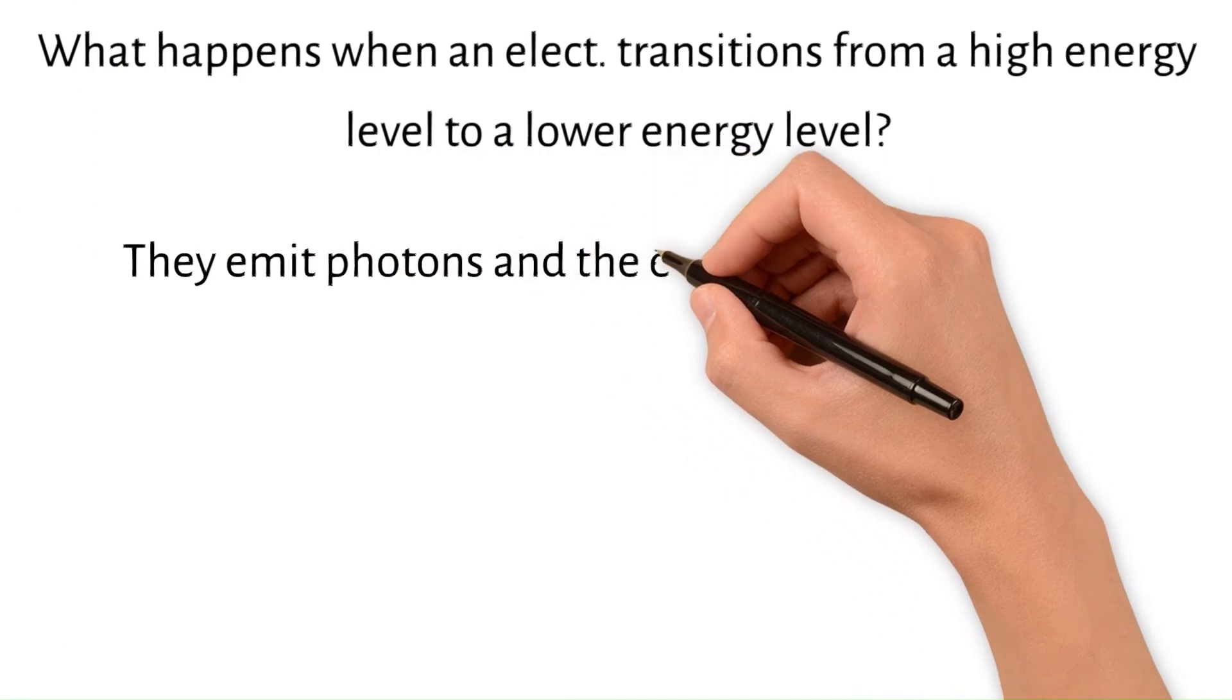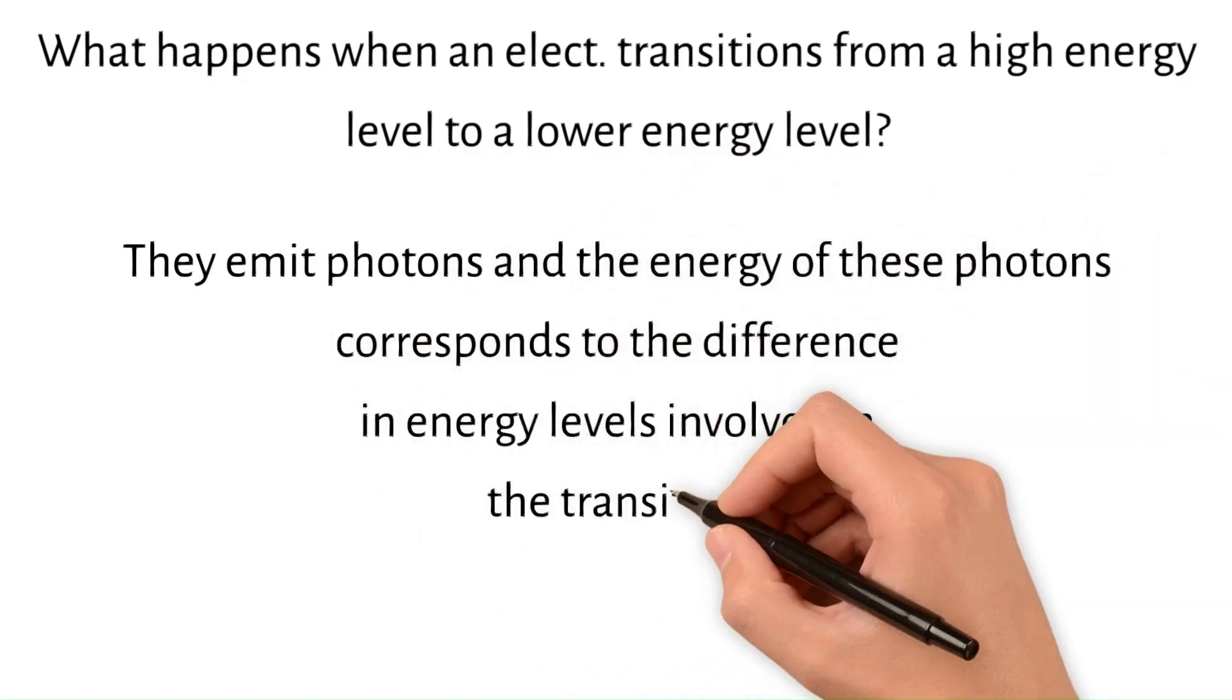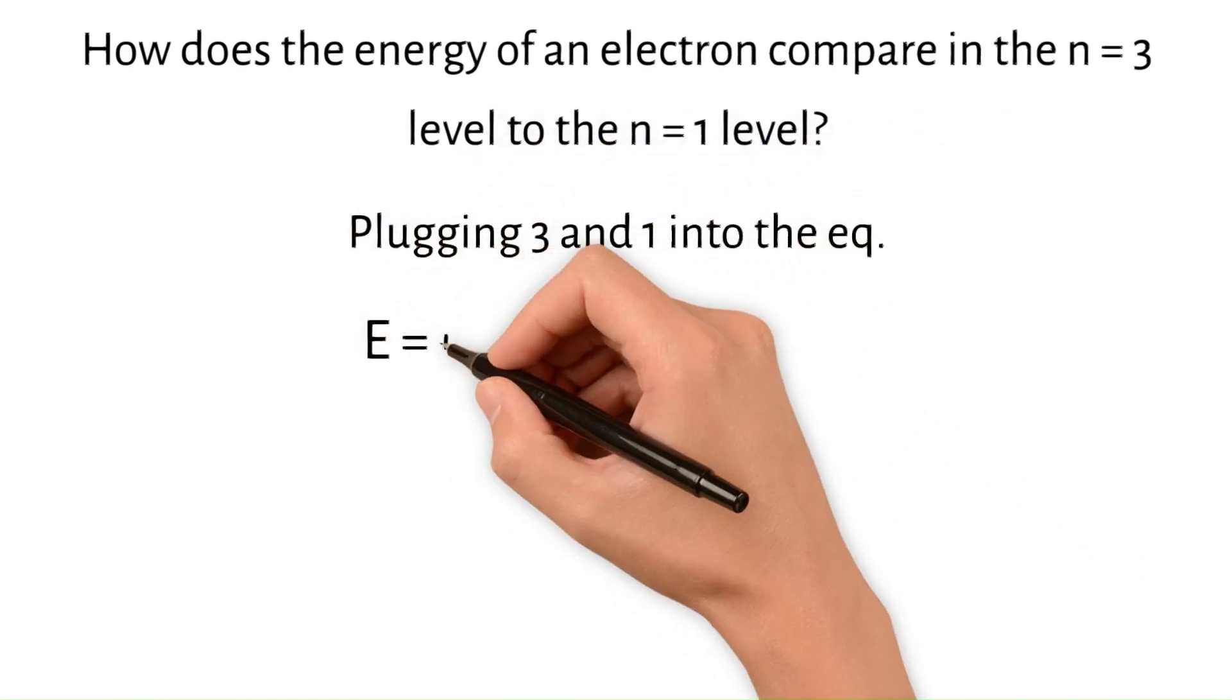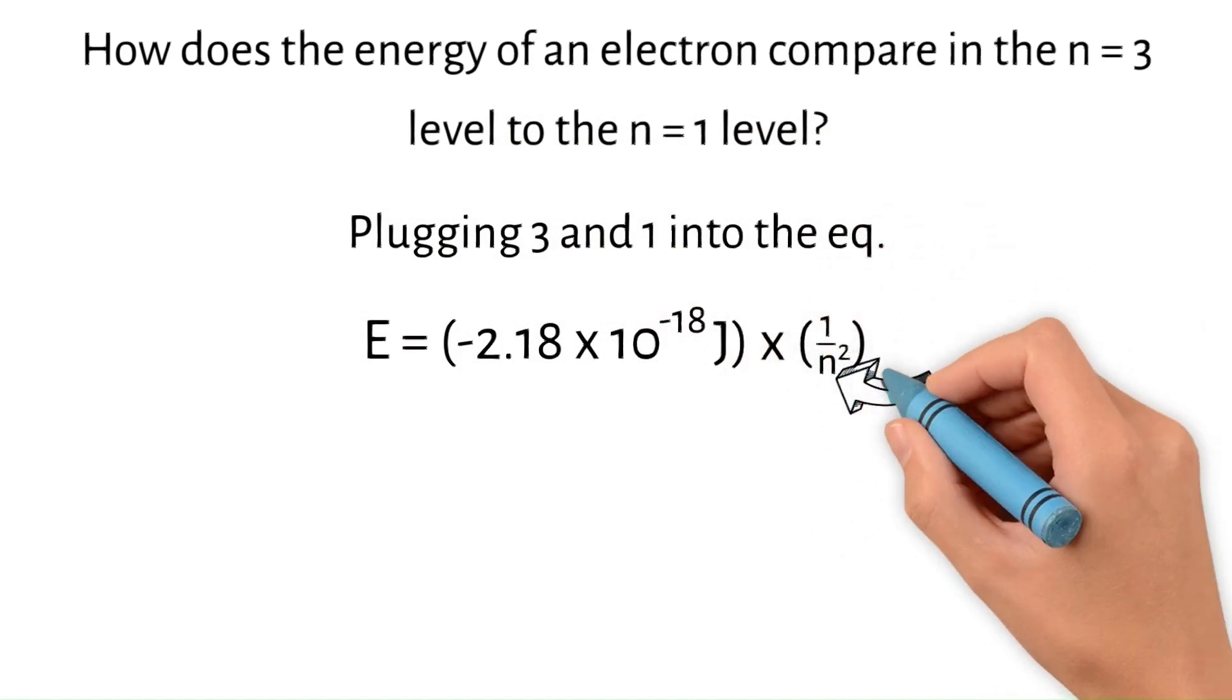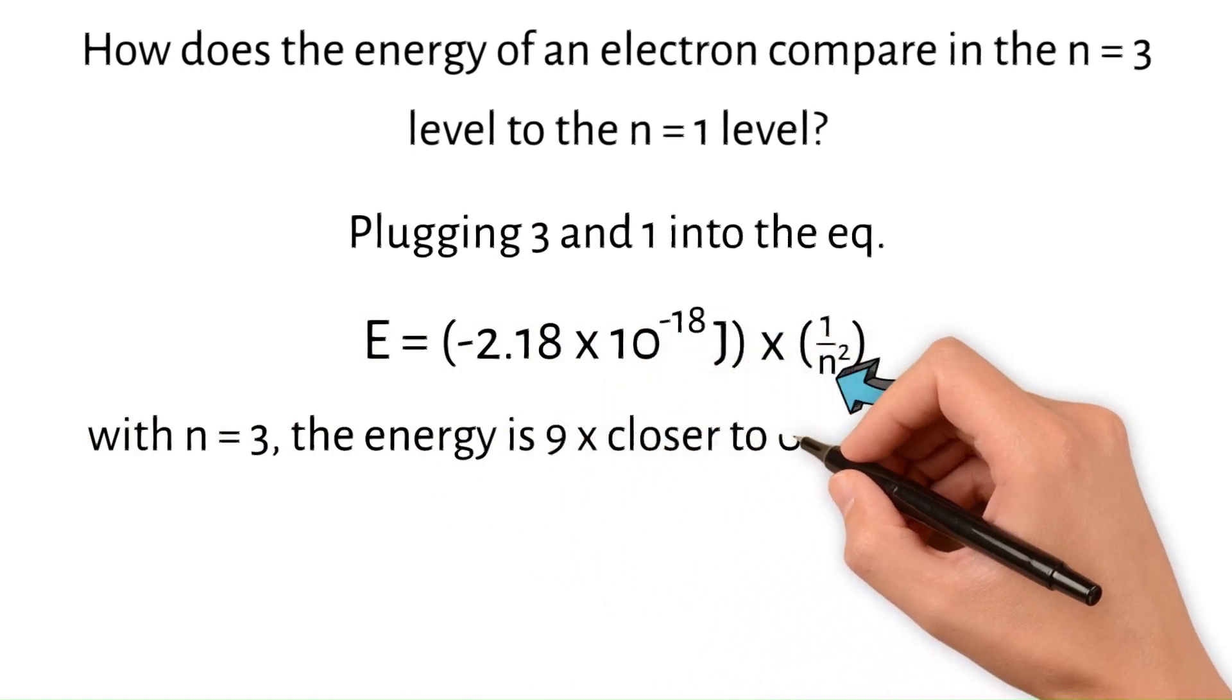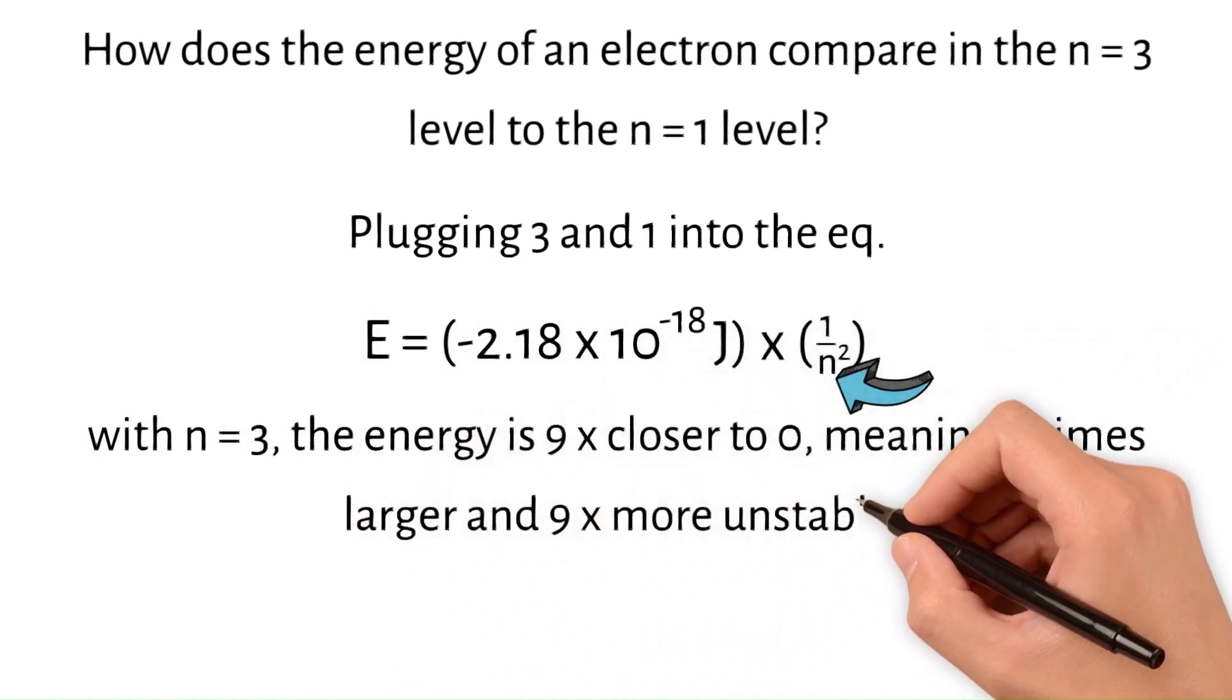They emit photons, and the energy of these photons correspond to the difference in energy levels involved in the transitions. Plugging 3 and 1 into the equation of E equals negative 2.18 times 10 to the negative 18th joules times 1 divided by n squared, you can see that with n equals 3, the energy is 9 times closer to 0, meaning that it is 9 times larger and 9 times more unstable.